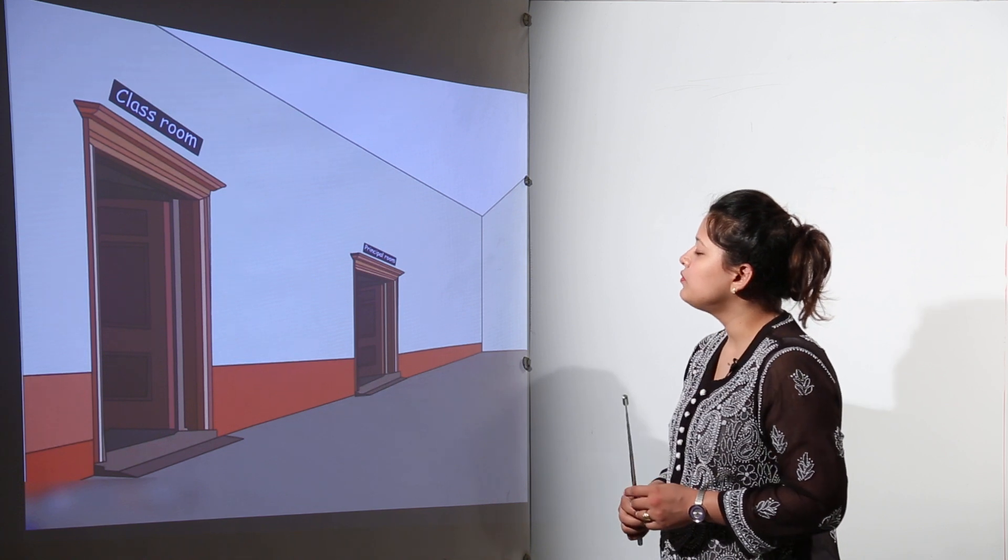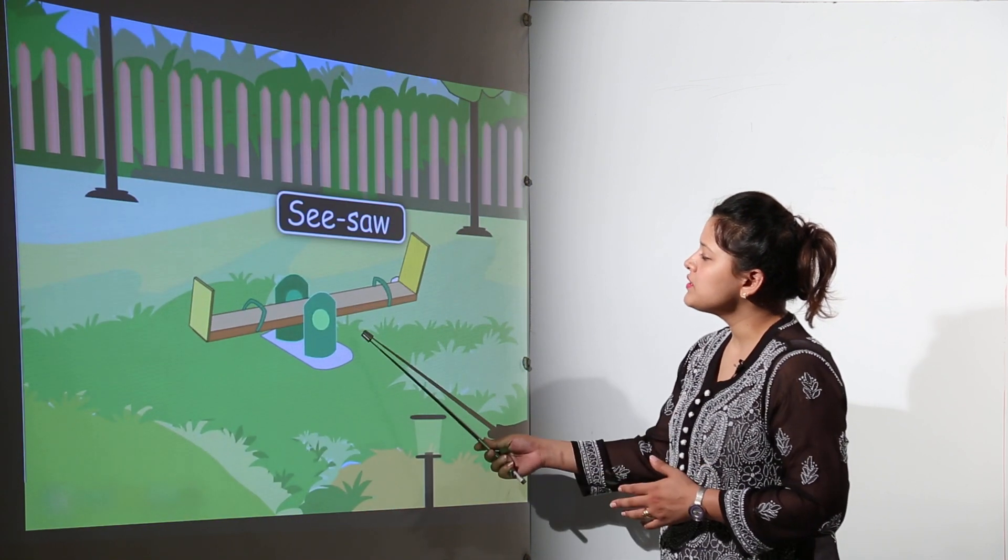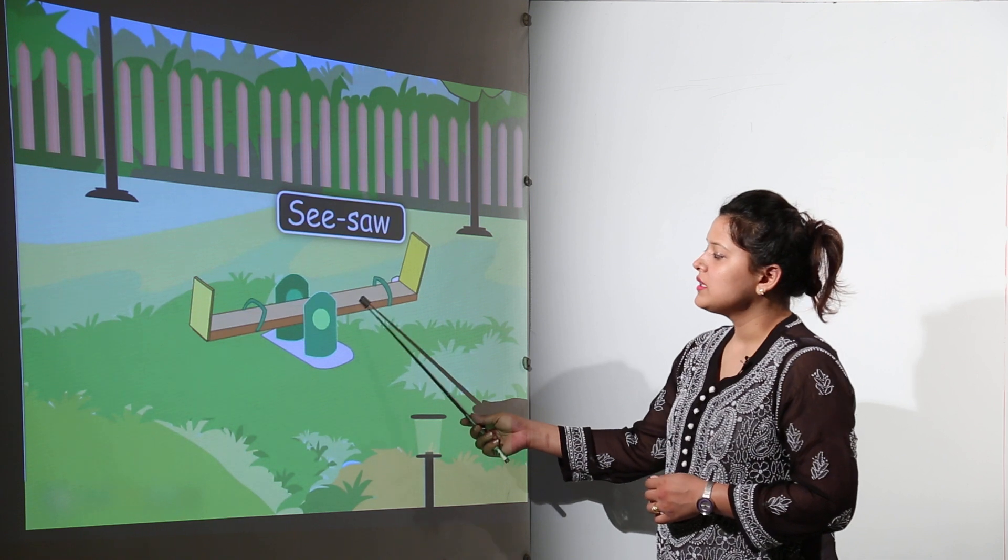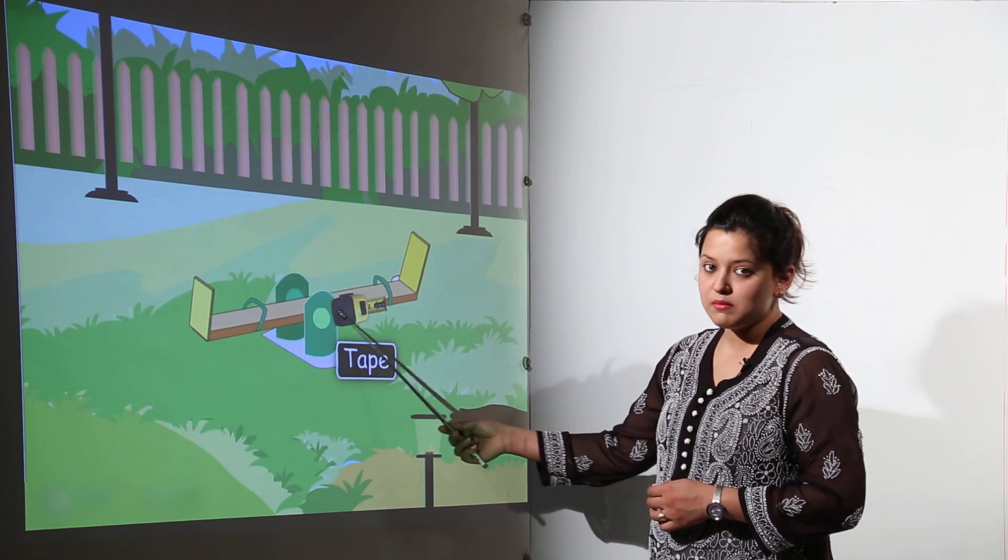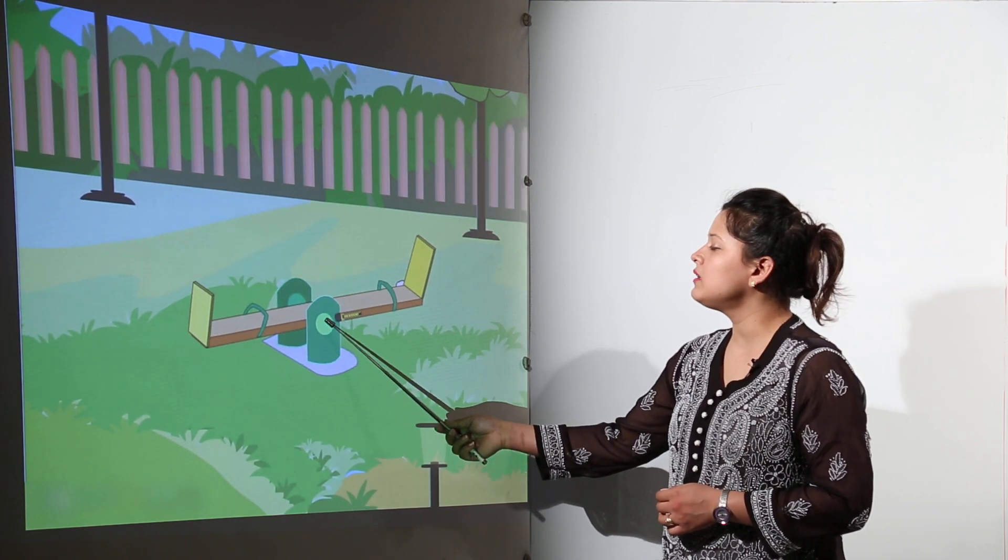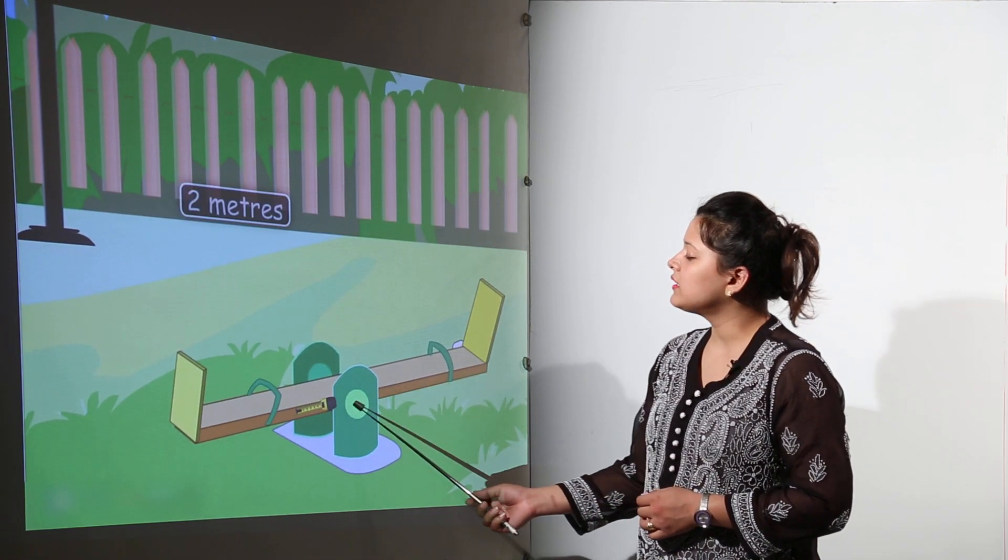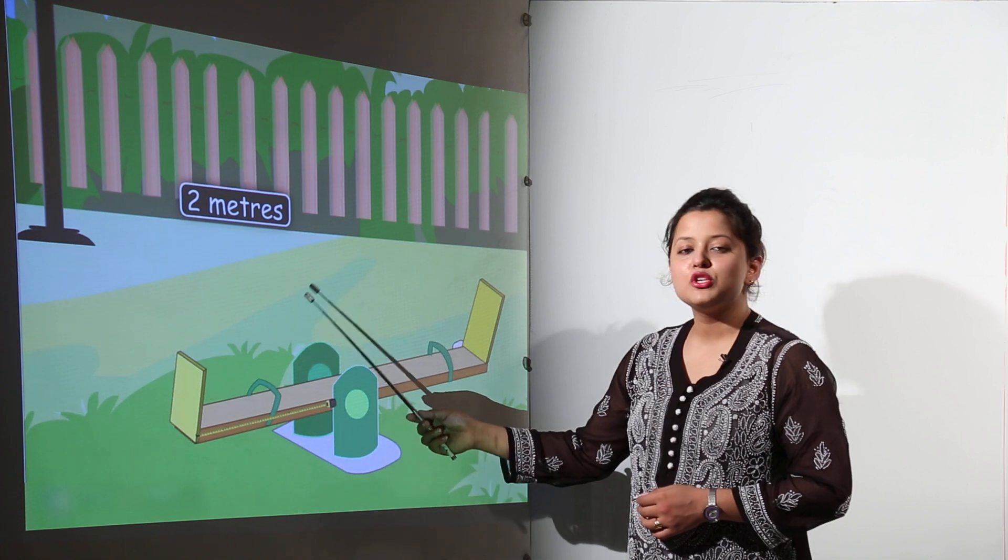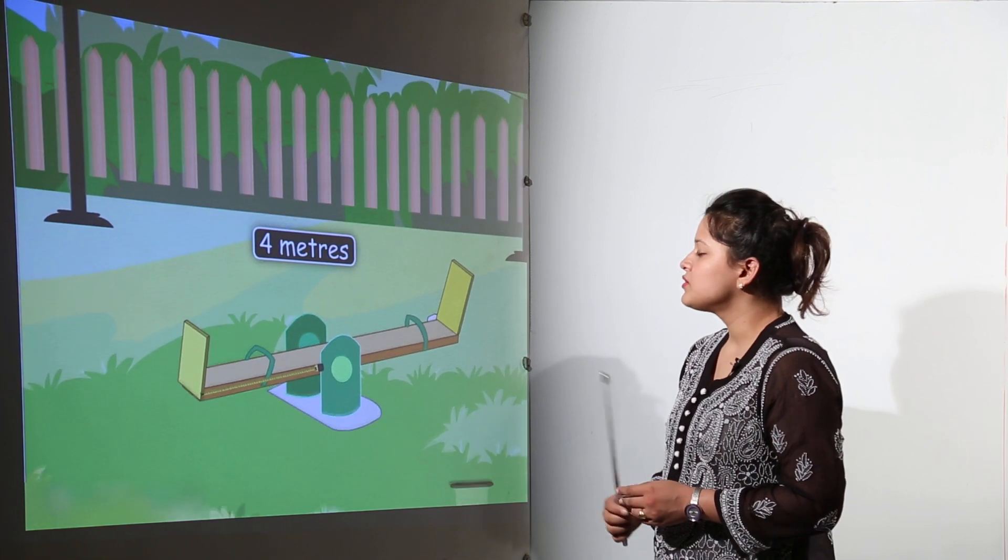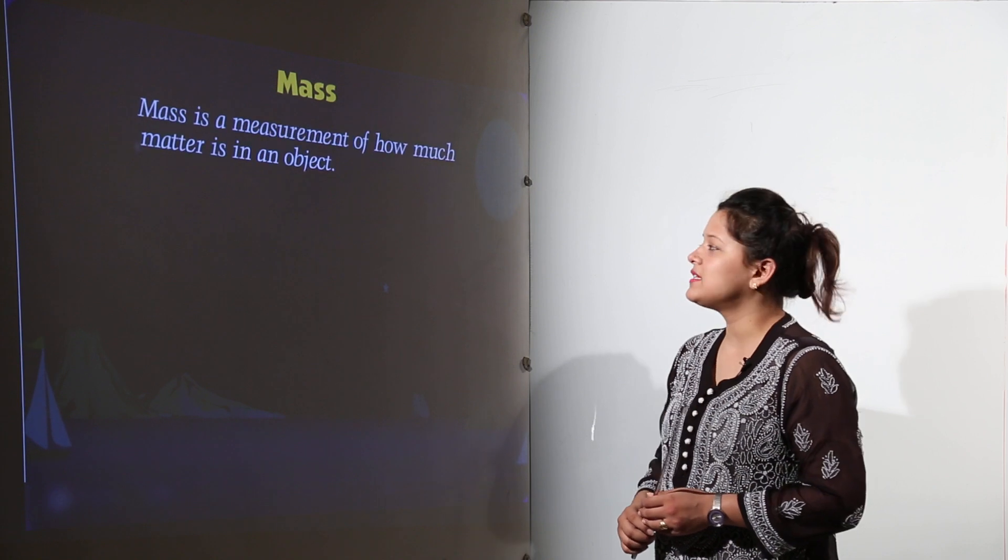Next what do we have is the measurement of the seesaw. The seesaw is having some length. We can measure it from the middle. On one side it is 2 meters and on the other side also it will be 2 meters in length. So in total the length of the seesaw is 4 meters.